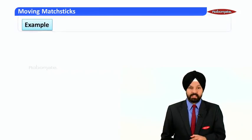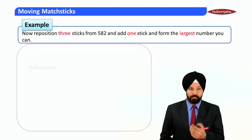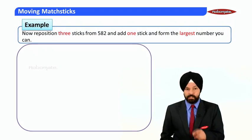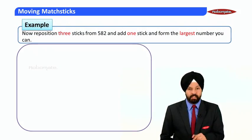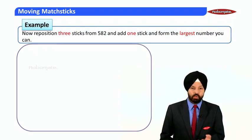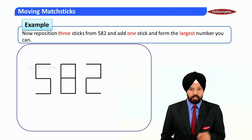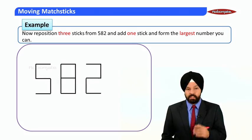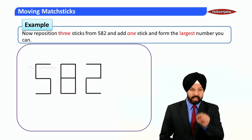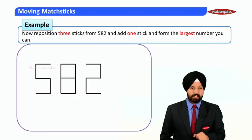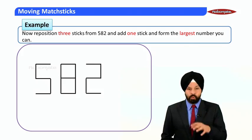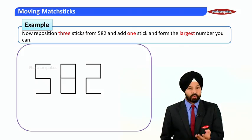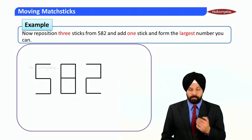In this module the first concept is in concern to a newer number. Till now all our questions were related to a single number 299, but now we are focusing on a new number 582. You can see 5 has been created using five matchsticks, 8 has been created by using seven matchsticks, 2 has been created by using five matchsticks. But our task is to reposition three matchsticks and add one more matchstick so as to form the largest possible number.